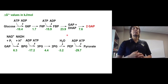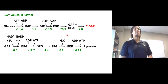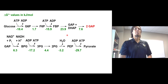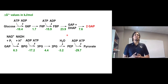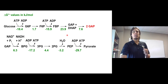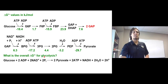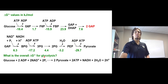We'll put the free energy changes underneath each step shown in green — these are the delta G naught prime values, the biological standard Gibbs free energy in kilojoules per mole. For instance, the first step has a biological standard free energy of negative 18.4 kilojoules per mole. To find the overall free energy change for glycolysis, we add the delta G values for each step.